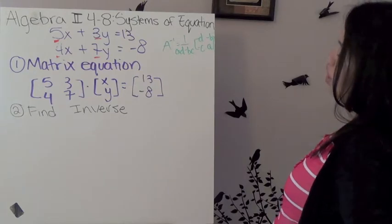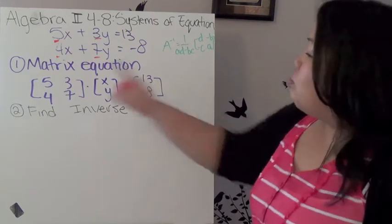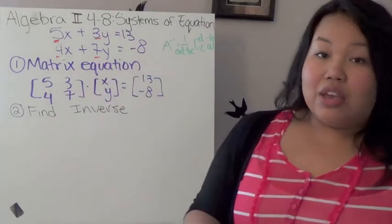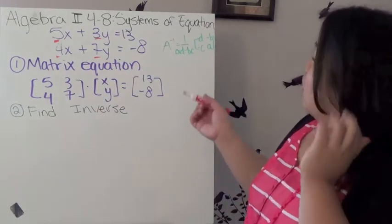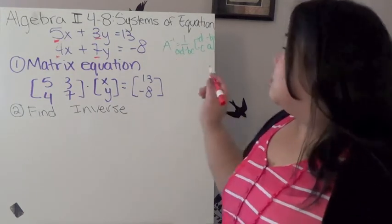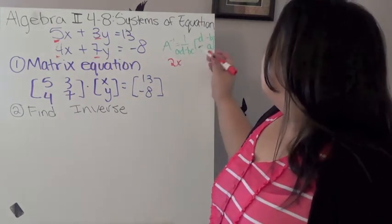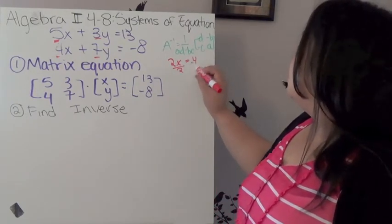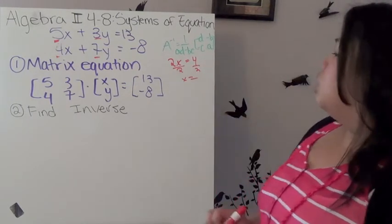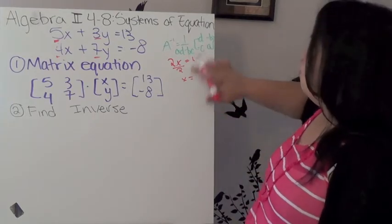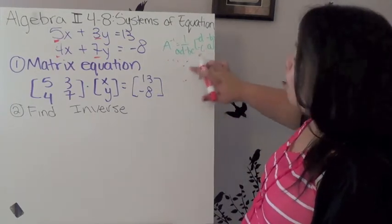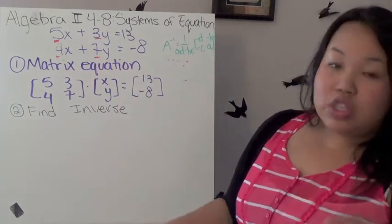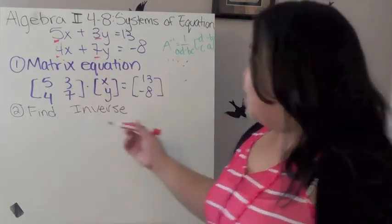So basically, what I want to do is I want to get rid of this so that I just end up with X and Y. And just like if we're solving an equation like 2X equals 4, I would divide both sides by 2 to get X equals 4 over 2. So in order for me to do this, I have to do the opposite. Well, the opposite of this, it so happens to be the inverse. So the first step is to take this and find its inverse.